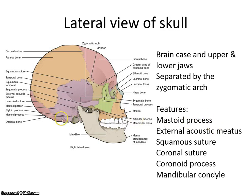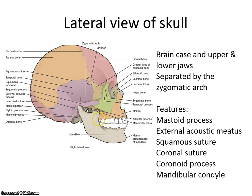From the lateral view we can see the mastoid process, just posterior to the ear and the external acoustic meatus — this tunnel for sound. There's a squamous suture, which is scale-like, separating the temporal from the parietal. A coronal suture runs on a frontal plane. The coronoid process means crown-like. There's a mandibular condyle — condyles are rounded articulation surfaces — and that's where the mandible articulates with the temporal bone.